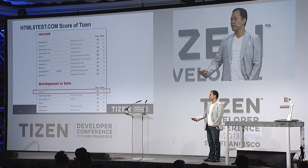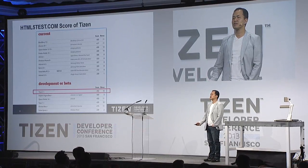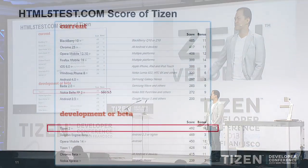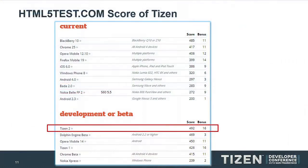This slide you've already seen. HTML5test.com is a really popular site for checking the interoperability of browsers. Tizen has the highest score in the world.